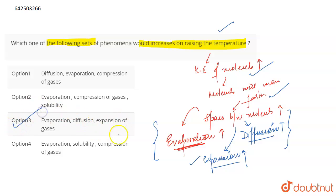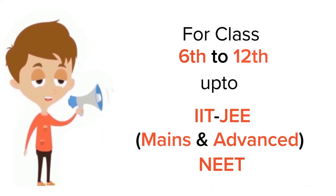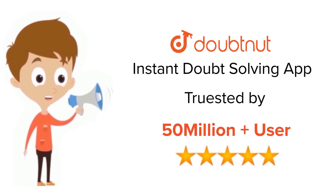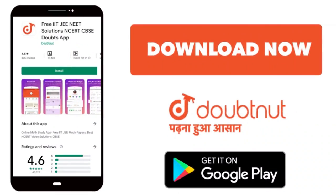That is why the correct answer for this question is option number three: evaporation, diffusion and expansion of gases. That's all for the question. For class 6 to 12th, IIT JEE and NEET level, trusted by more than five crore students — download DoubtNit app today.